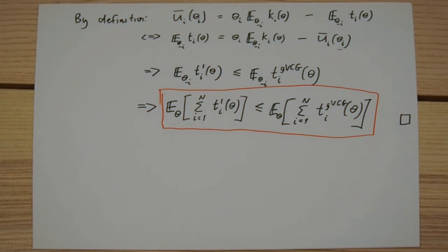We see that any other interim individually rational mechanism does indeed collect less expected revenue than does the generalized VCG mechanism. This implies that if you want to implement the efficient allocation and ensuring player participation is one of your concerns, then generalized VCG is a very appealing mechanism to use.